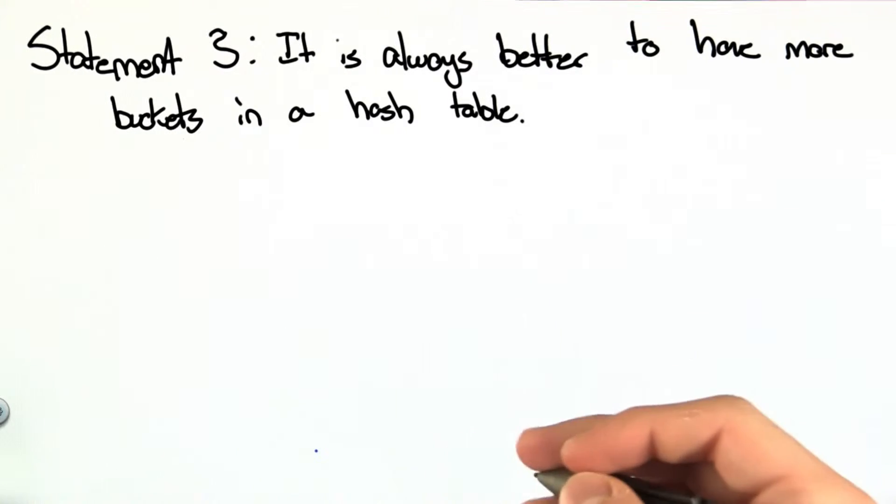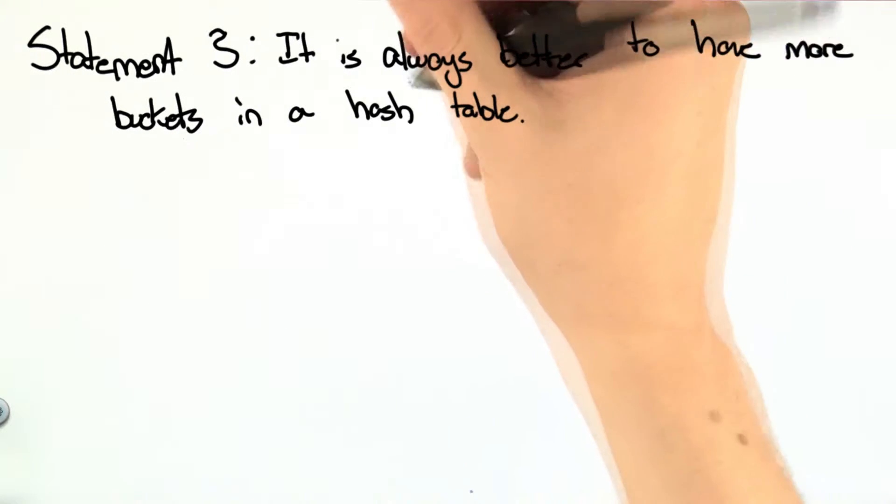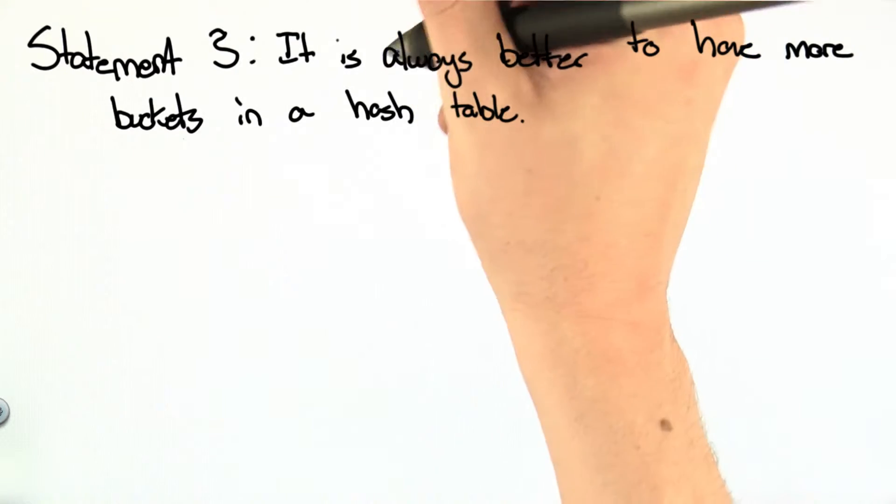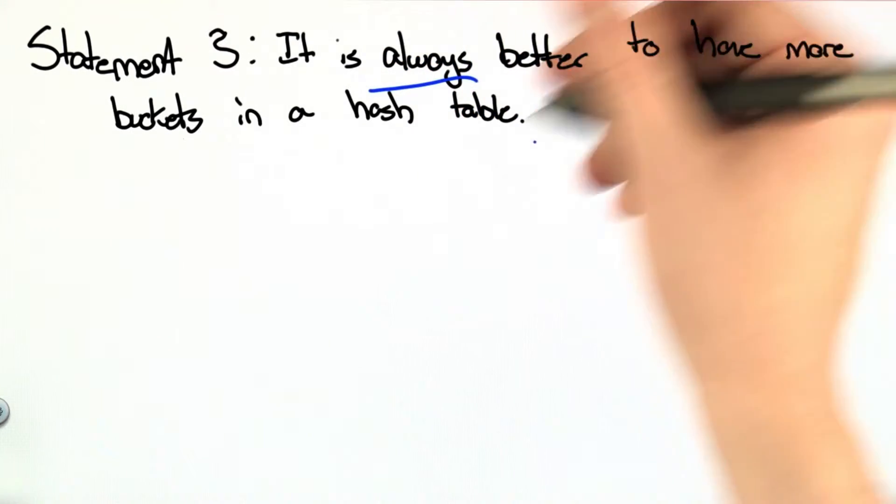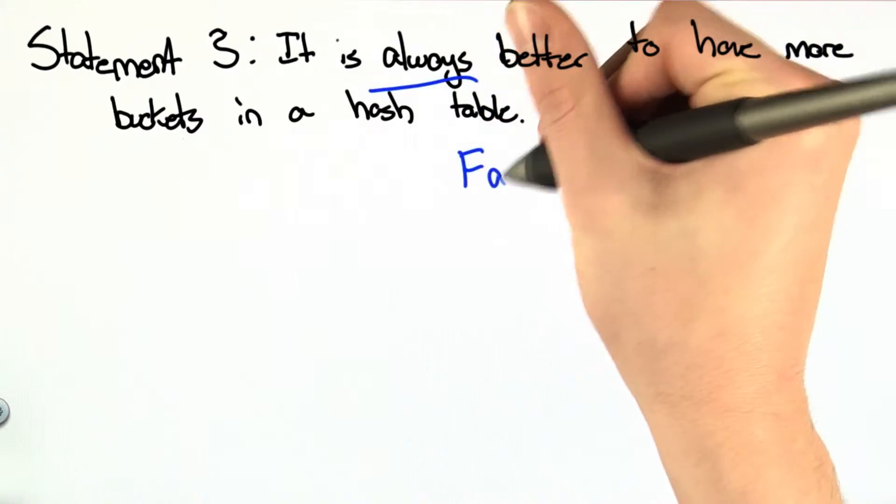Statement 3 says it is always better to have more buckets in a hash table. This is a pretty strong statement, as indicated by the use of the word always. And it's really because of that word that the statement is false. And there's really two good reasons.